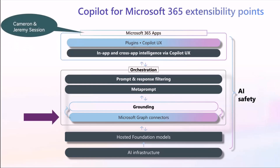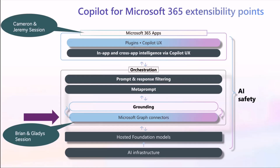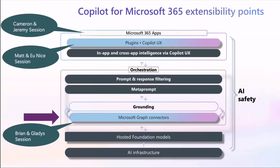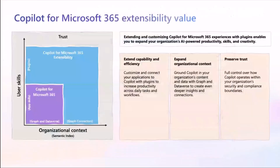Going on right now, and maybe even half an hour from when we end, Cameron and Jeremy are doing sessions around Co-pilot 101, talking about the top of the stack. Tomorrow, Brian and Gladys do a deep dive into Graph Connectors — they'll talk about out-of-the-box connectors that Microsoft publishes, connectors you can build yourself, and ones you can get from the portal. And Math, Eunice, and myself are going to be talking about plugins tomorrow as well, which is the other extensibility model option.